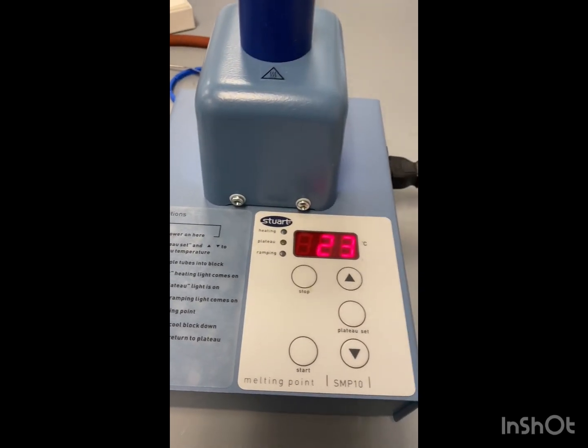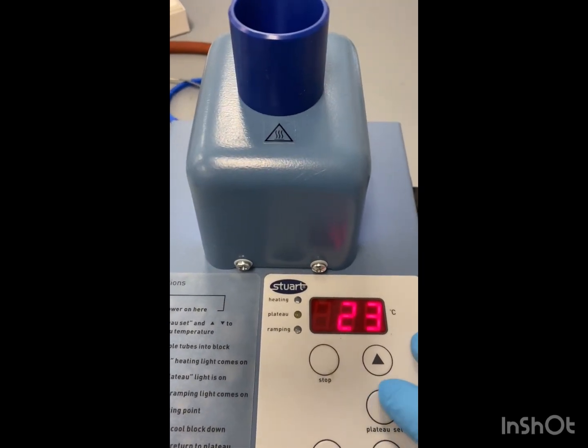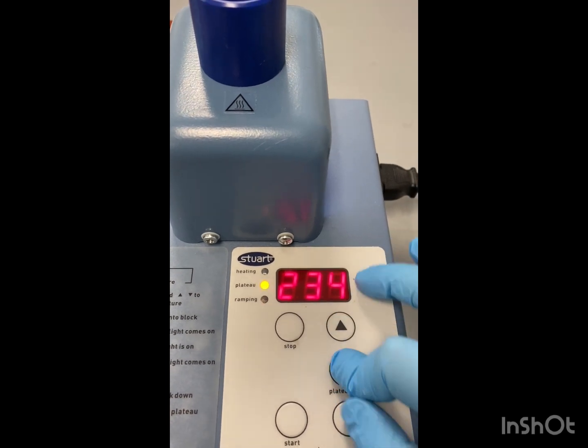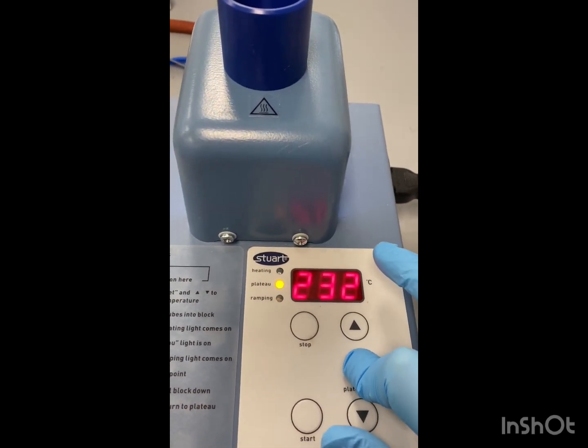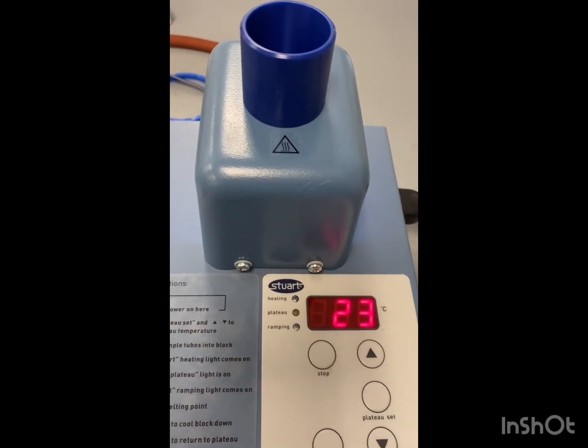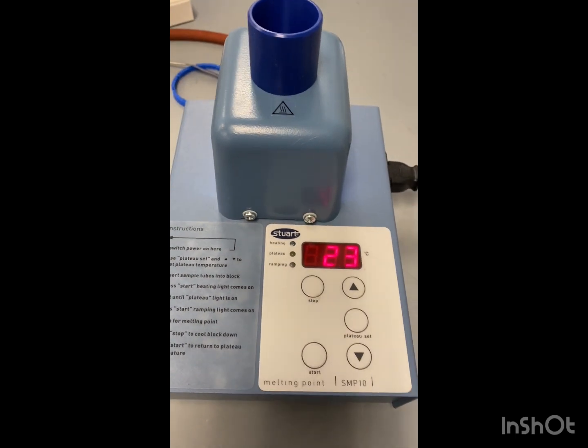All right, so since our range is around 236, we're going to plateau set. I went ahead and set it at 233, somewhere around there. You don't want to add the melting point range because we're going to ramp it and heat and watch it melt, hopefully around in that range.